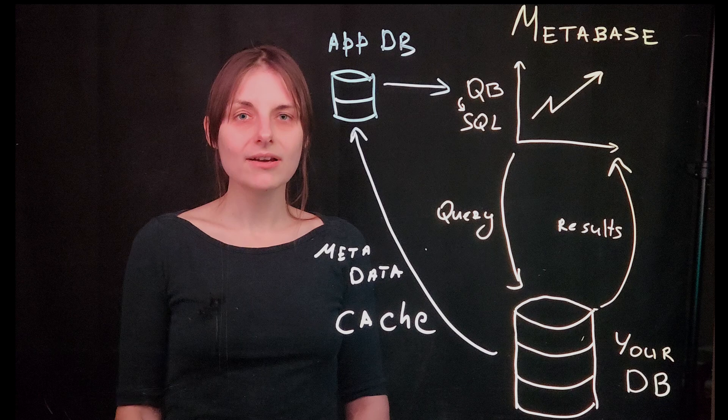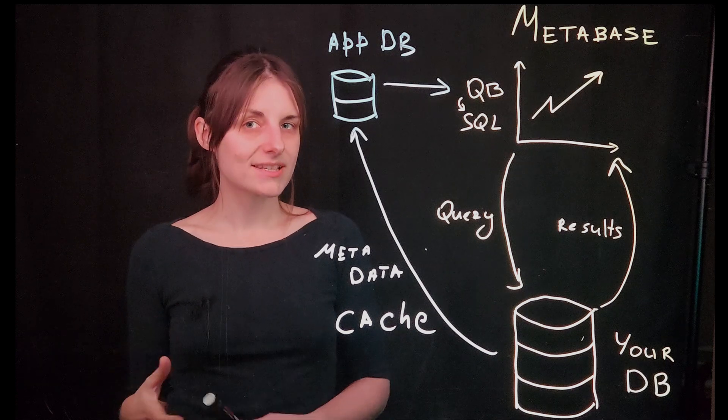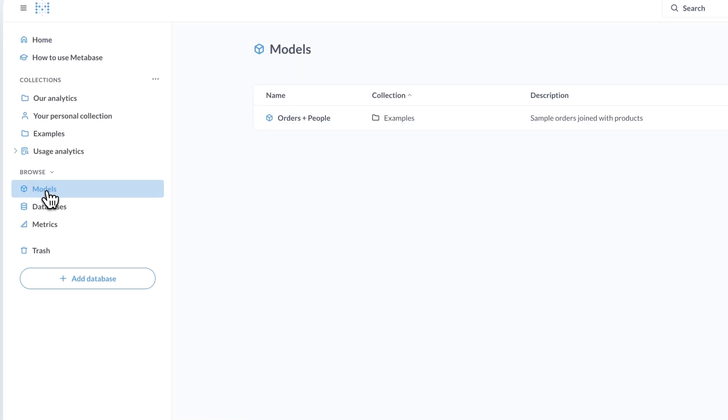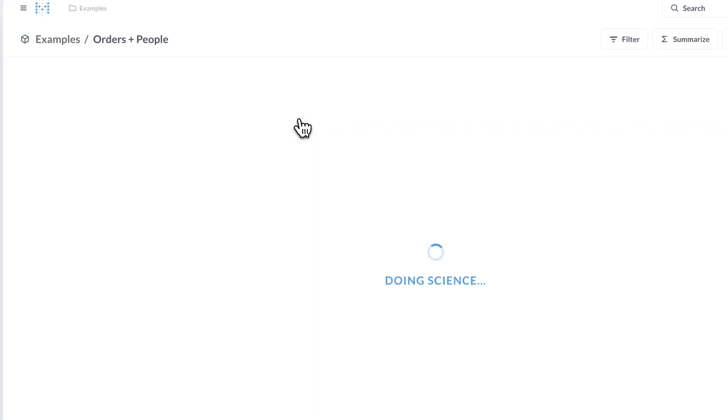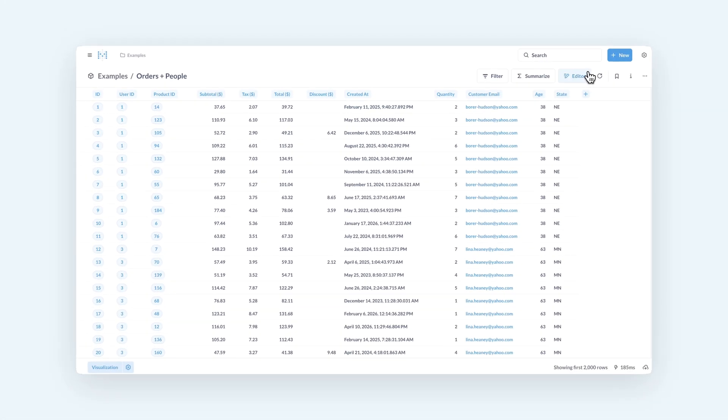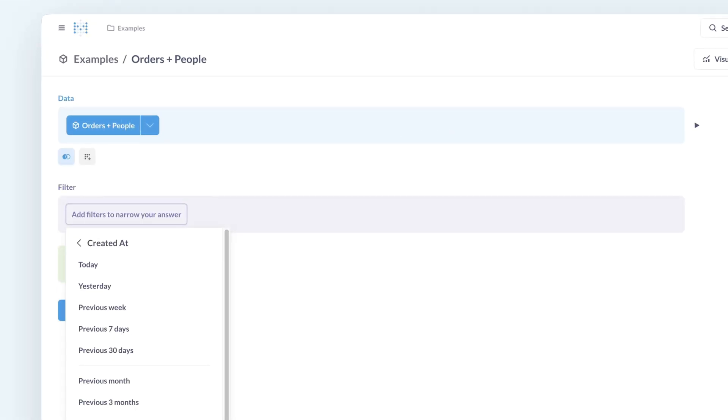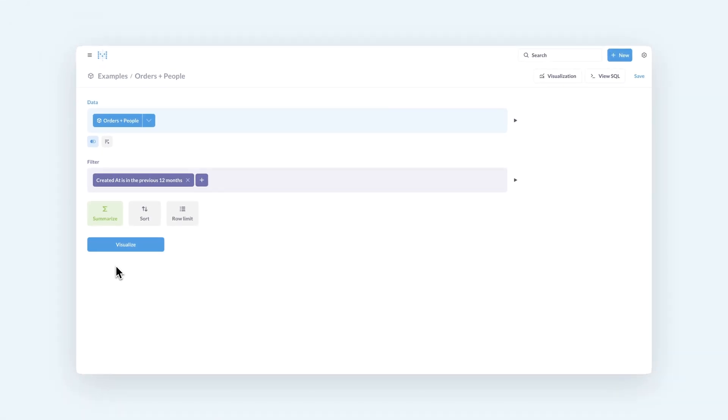The final thing I want to talk about is model persistence. Models are derived datasets in Metabase, sort of like pre-joined, pre-computed alternative data sources that other people in your organization can use to build the queries instead of building them just based on the database tables.